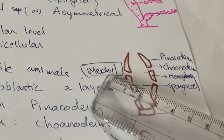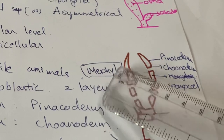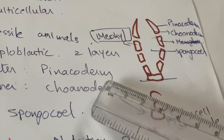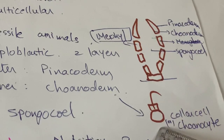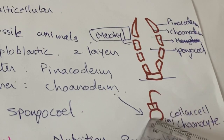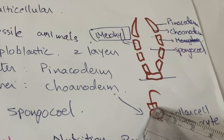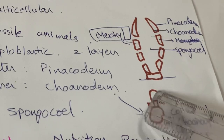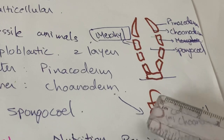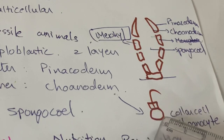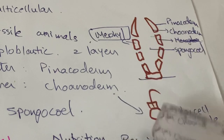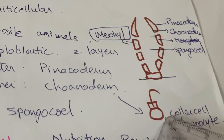The cells of the pinacoderm are known as pinacocytes, and the cells of the choanoderm are known as choanocytes or collar cells. These are called collar cells because they contain a collar-like structure along with a flagellum. The inner choanoderm consists of these types of cells.